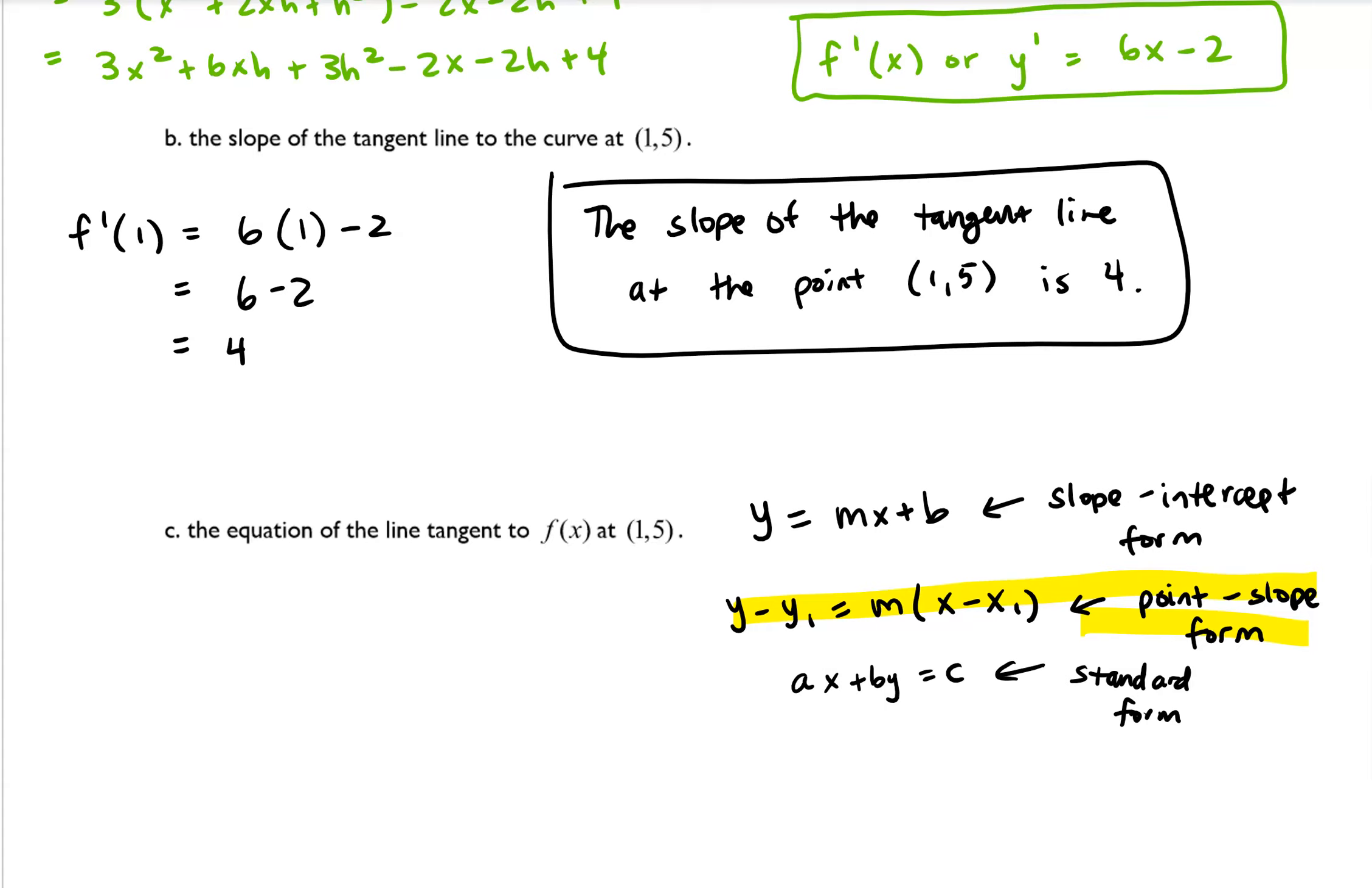And so we have y minus our y value for the point. This is x1 and this is y1. So we have y minus 5 equals our slope, which we calculated in the previous one. And the previous part was 4 and then times (x minus 1).